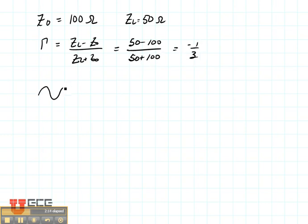That means that if I'm propagating a one volt incident wave, that my V0 minus is going to be minus one third. So as it comes back this direction, it's going to have a magnitude, actually from zero, of one third.